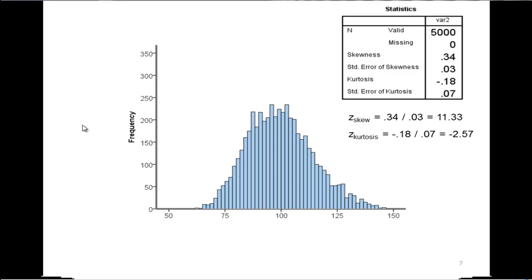Values equal to 11.33. Kurtosis is also statistically significant at negative 2.57. Because these values are both greater than an absolute value of 1.96, we would conclude that the distribution is non-normal.